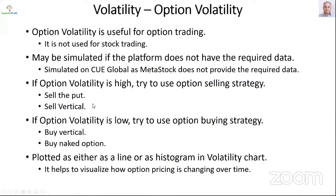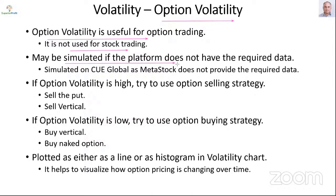Next we move to the volatility category of indicators. First one is option volatility — useful for option trading, not for stock trading. It is simulated in Q Global because MetaStock does not yet have the required detailed option data. So if I am trading options, I may view the volatility on Q Elite, not really on Q Global.